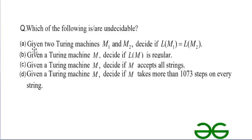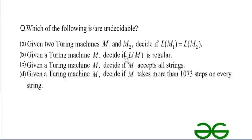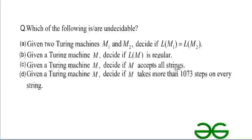Statement two: given a Turing machine M, decide if L(M) is regular. This is the regularity problem, and it is a non-trivial property, so it is undecidable. Statement three: given a Turing machine M, decide if M accepts all strings. This is the membership problem, and for Turing machines the membership problem is also undecidable.